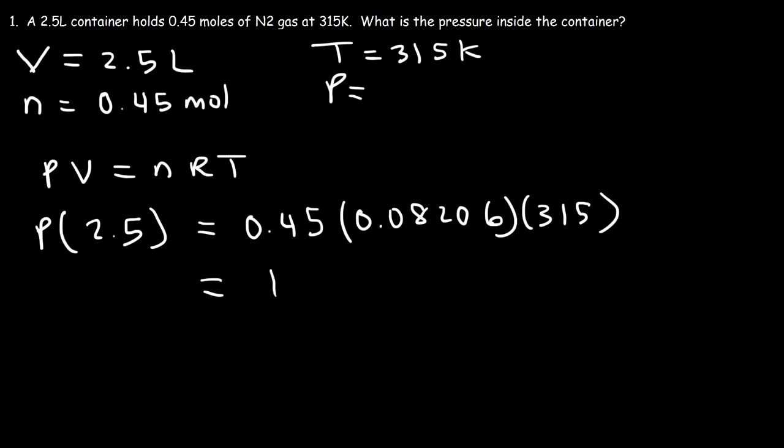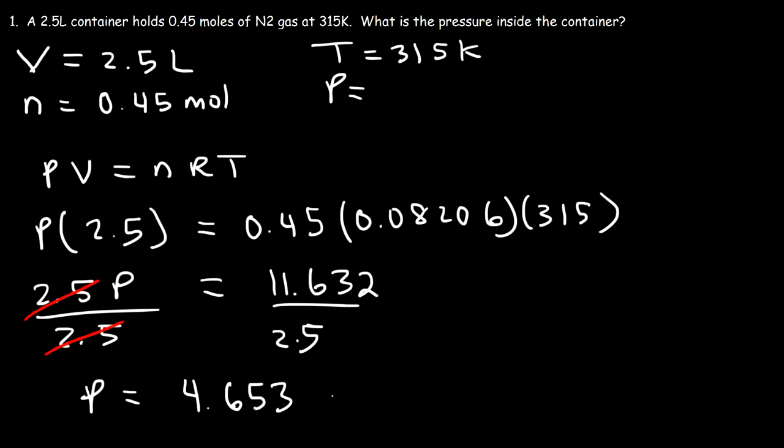So that's equal to 11.632. Now to get P by itself we've got to divide both sides by 2.5. So it's 11.632 divided by 2.5, and that's going to give you a pressure of 4.653 atm. And so this is the answer to this problem.